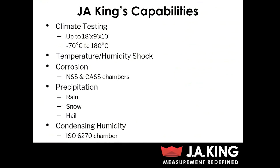Now to touch on our capabilities here at the JA King Test Lab. For climate testing, we've got a range of different climate chambers, ranging from small reach-in style chambers to very large drive-in chambers up to 18 by 9 by 10 feet. In terms of temperature, we can go down to negative 70 degrees Celsius and all the way up to 180 degrees Celsius. We do also have chambers for temperature and humidity shock testing. For corrosion, we can perform both neutral salt and cast testing. For precipitation, we can handle all types including rain, snow, and hail testing. And we do also have a condensing humidity chamber that conforms to ISO 6270.